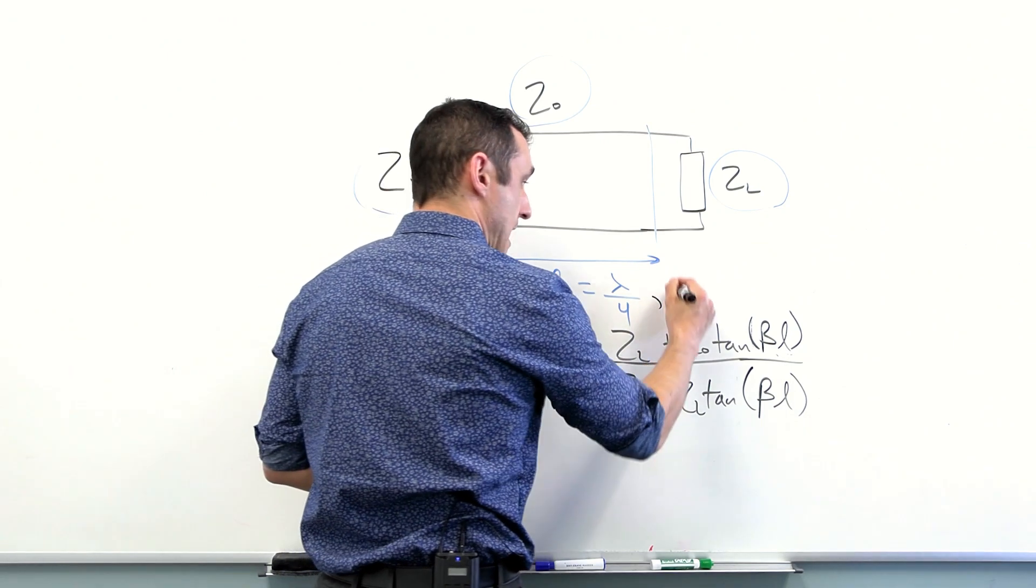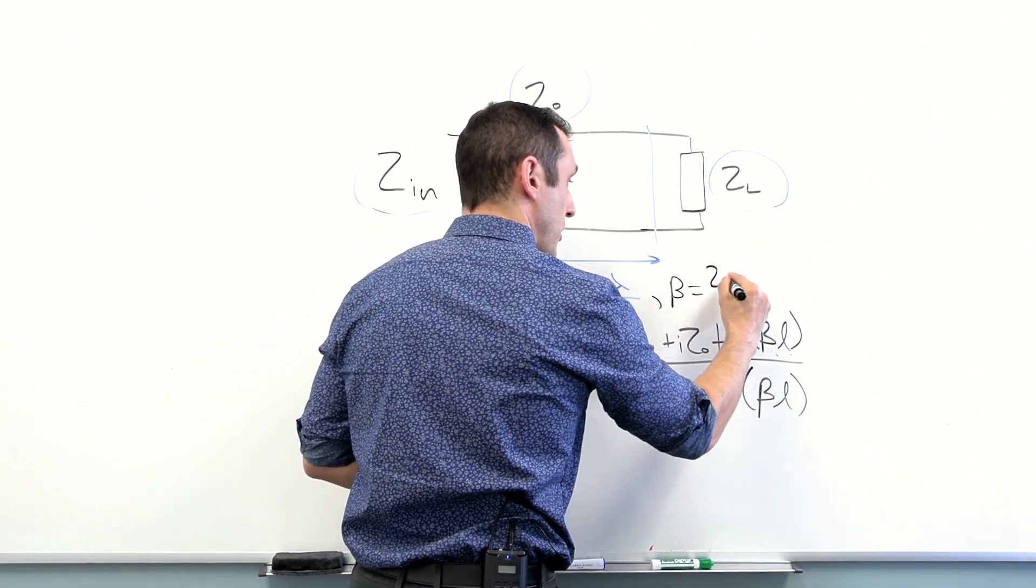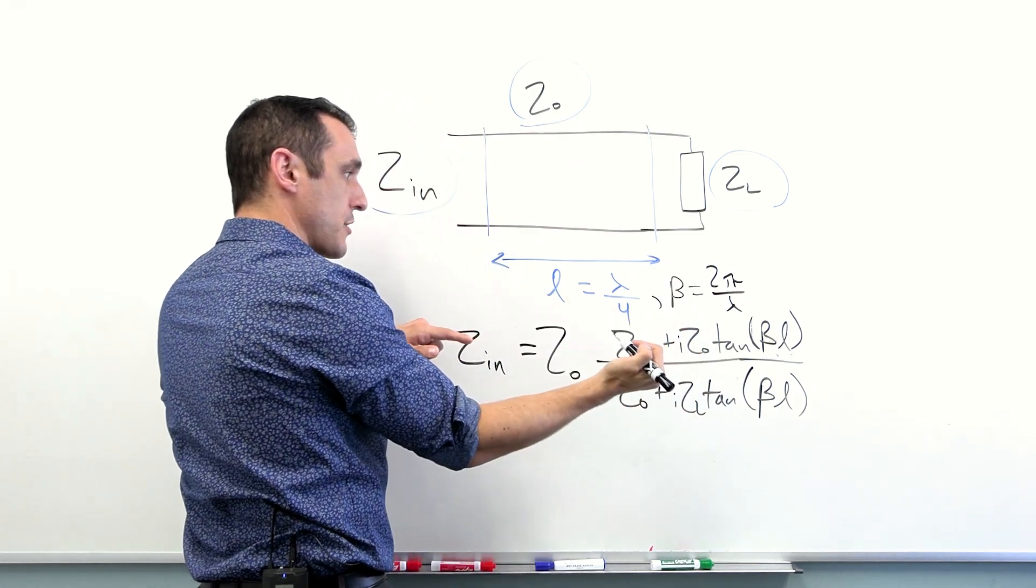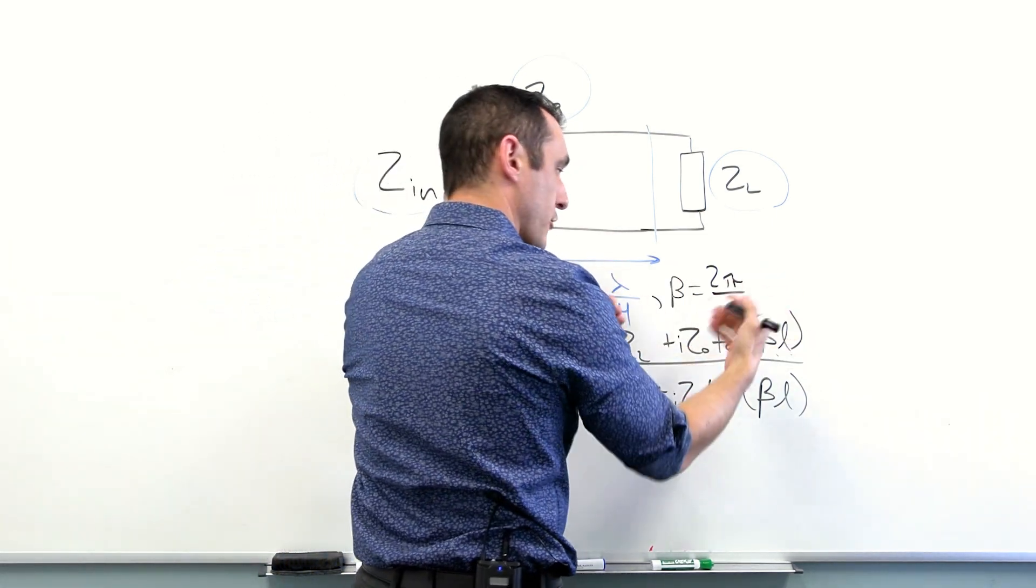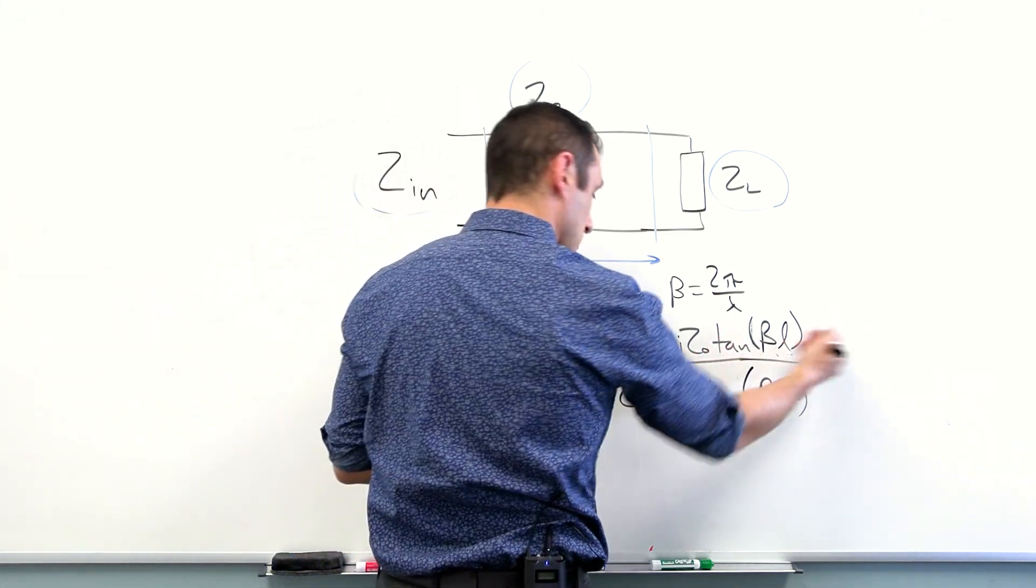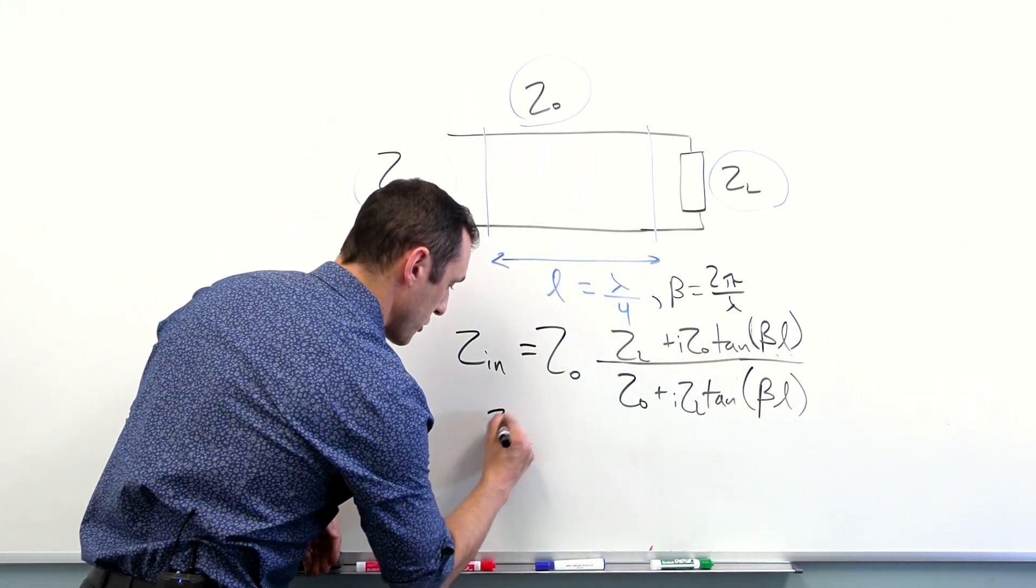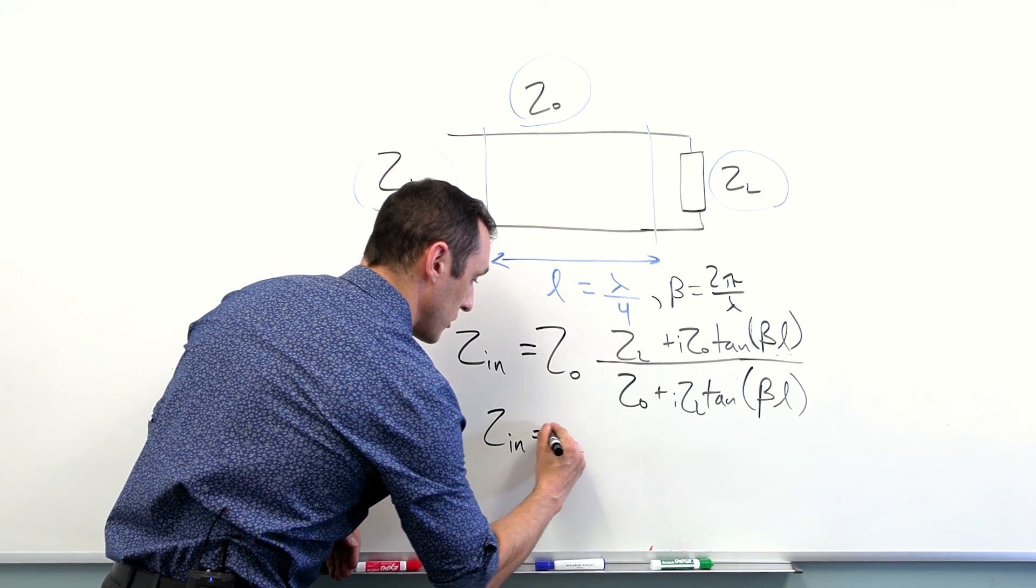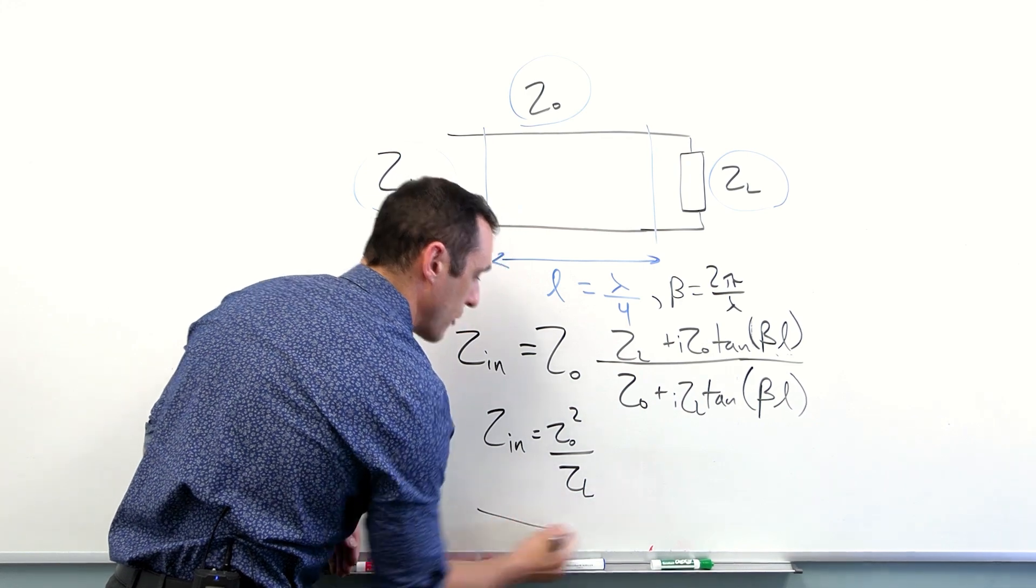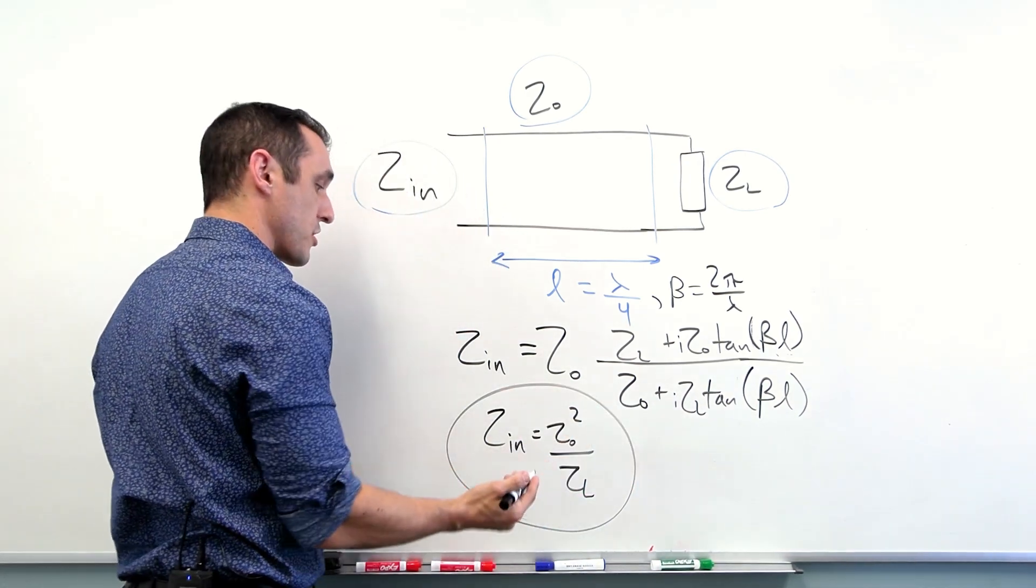Recognizing that beta is just equal to 2 pi divided by lambda, if we multiply these guys together, we get pi over 2. Anyone who knows what tangent of pi over 2 is, it approaches infinity. And so this reduces to Zn equals Z sub 0 squared over Z sub L. And that's how we get to this important result.